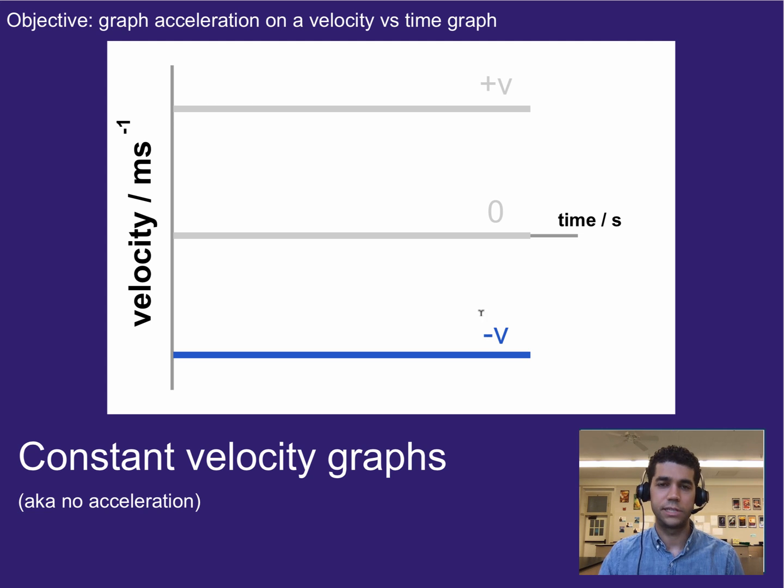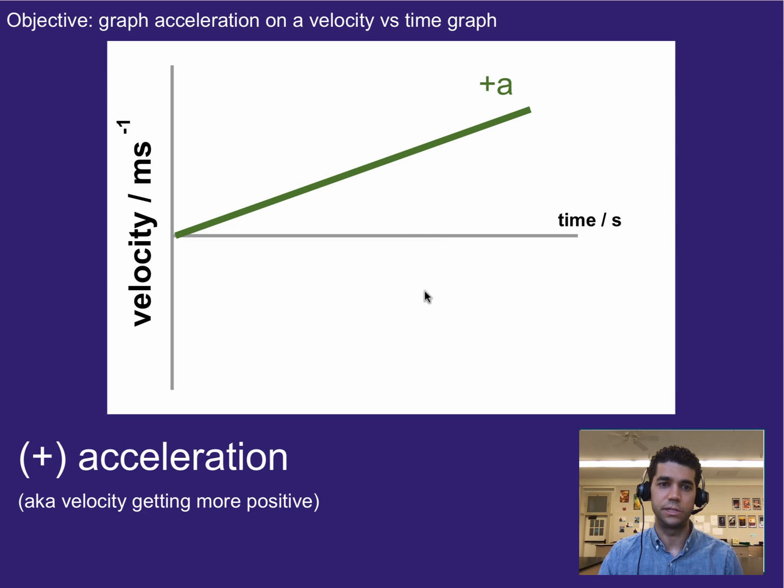So now that we've looked at constant velocities—positive, negative, and zero, so not moving—we can think about what would it look like for something to accelerate? Well, instead of the velocity staying at the same value, we'd expect to see the velocity increase, or maybe for the velocity to decrease, which brings us to acceleration.